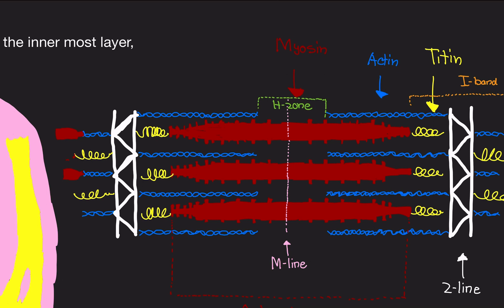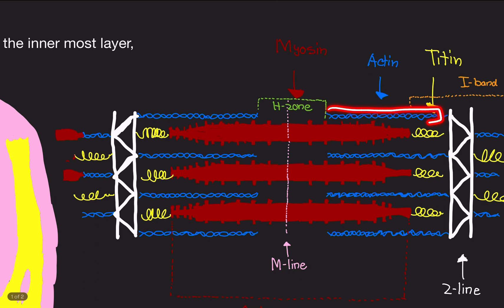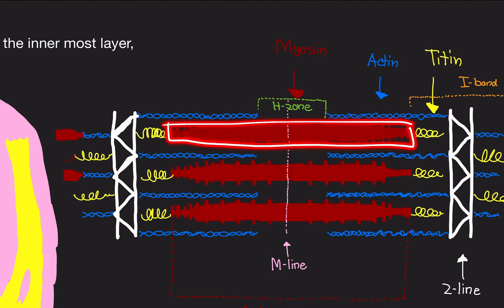So this white bridge looking structure is called the z-line. The sarcomere is made up of two types of filaments. One is called actin and the other one is myosin. Actin is also known as the thin filament. This blue looking structure here I drew is actin or the thin filament. This red structure here is known as myosin, which is the thick filament.